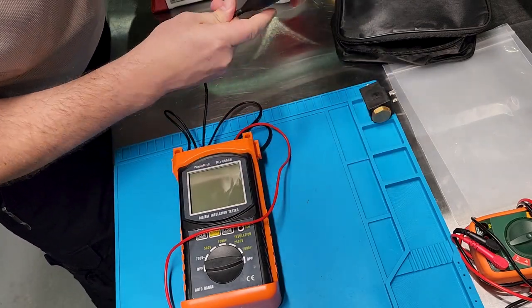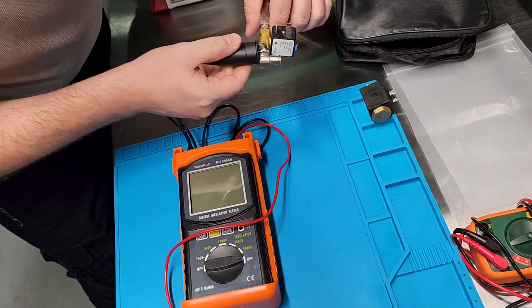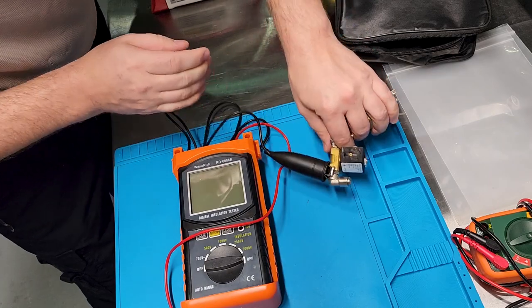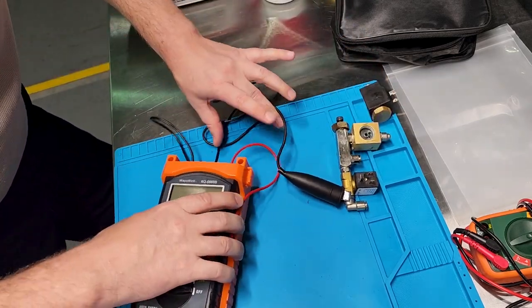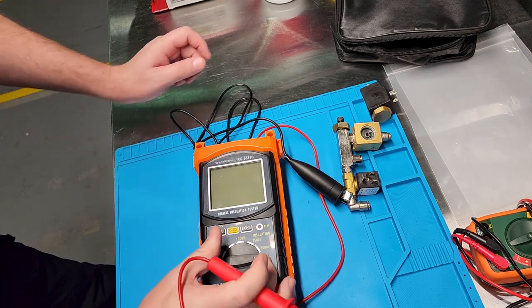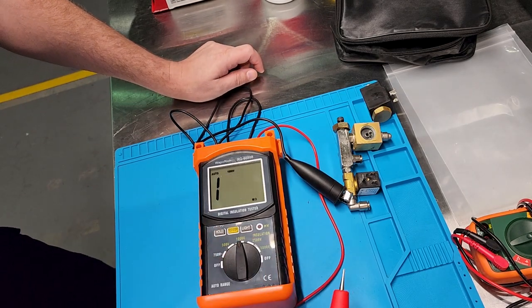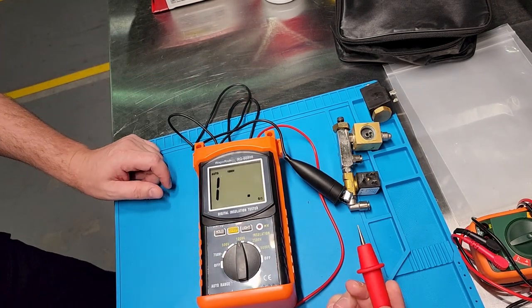Let's test a known good solenoid. Okay, so this one here is a known good solenoid. I'm going to put it here on a silicone mat because we are working with high voltage.